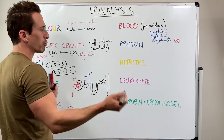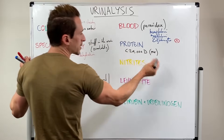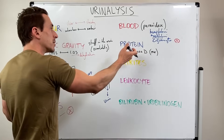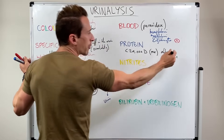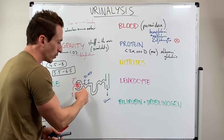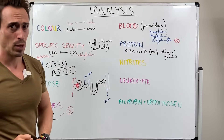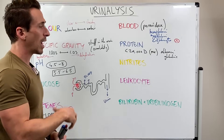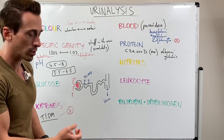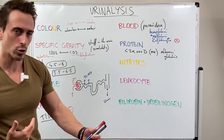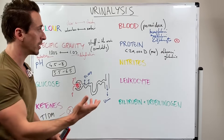Only proteins smaller than 20,000 Daltons in molecular weight can be filtered at the glomerulus. Smaller proteins that get filtered include albumin and some globulins, which are usually carrier molecules. Most are reabsorbed back into the body. Increased protein in urine can happen transiently — due to heart failure, exercise, fever, or stress — or long-term, usually due to some form of nephropathy such as glomerulonephritis, which causes damage to the glomerulus.